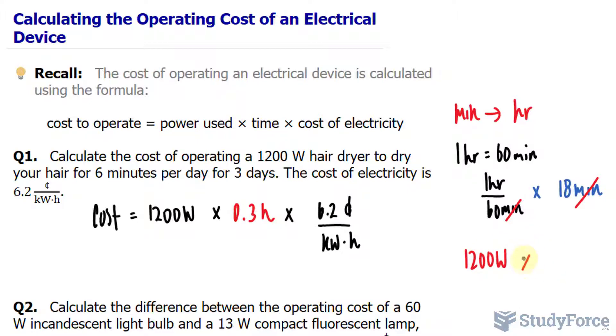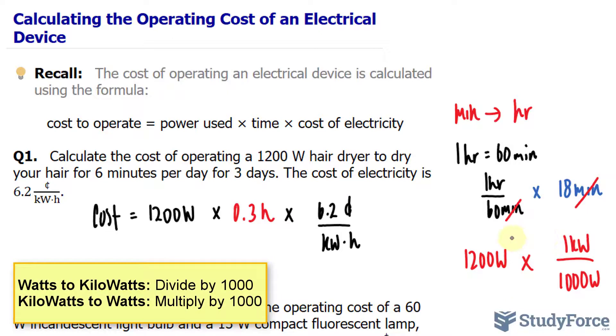Or another way to think about it is for every 1000 watts, there is 1 kilowatt. So this mathematical expression is the same thing as saying 1200 divided by 1000.